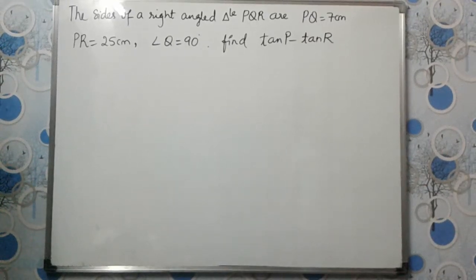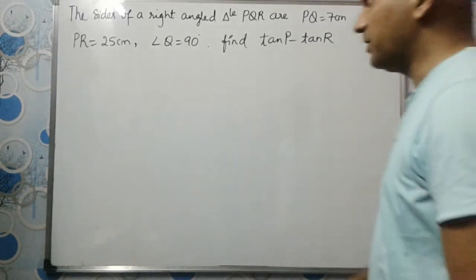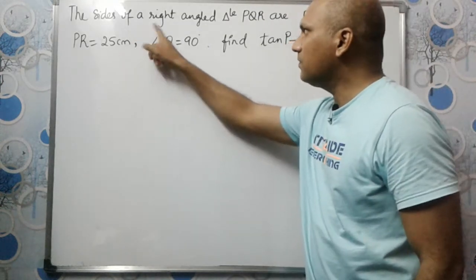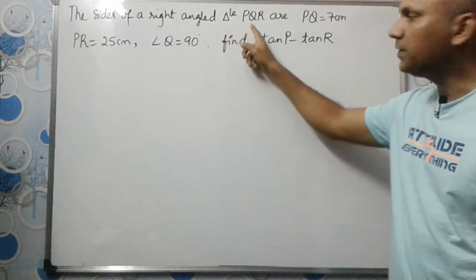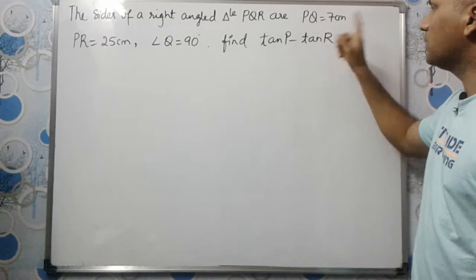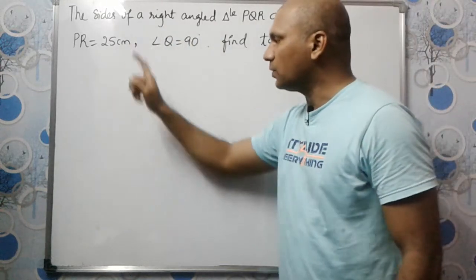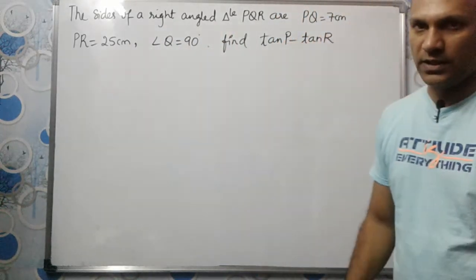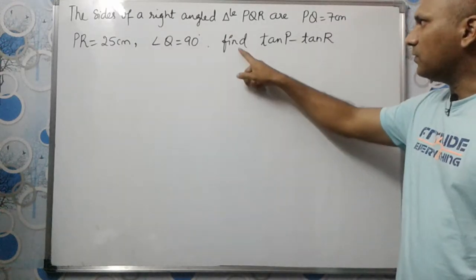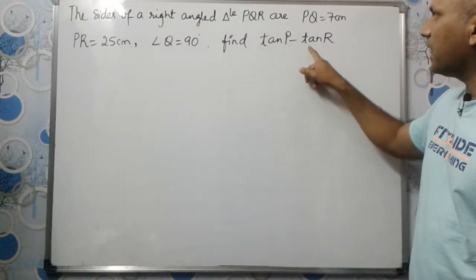Hello students, in this video we are going to solve this problem from trigonometry. The sides of a right-angled triangle PQR are PQ equal to 7, PR equal to 25, and angle Q is 90 degrees. We need to find tan P minus tan R.